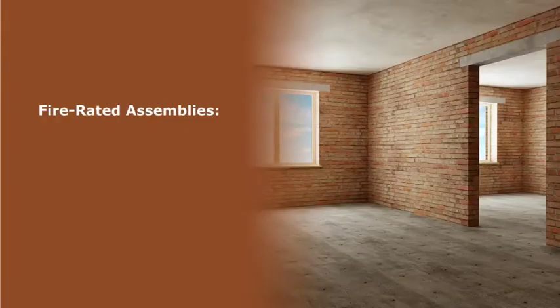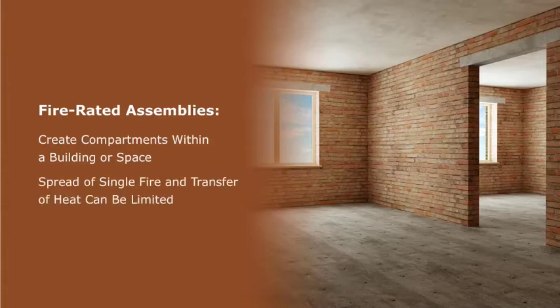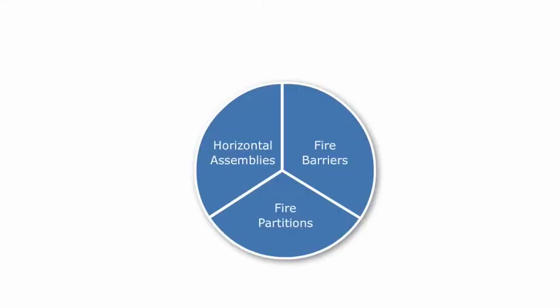Fire rated assemblies are used by the codes to create compartments within a building or space by separating different areas, sometimes both horizontally and vertically, to limit the spread of a single fire and transfer of heat. There are three basic types of rated assemblies: fire barriers, fire partitions, and horizontal assemblies. The codes determine when each type is required to provide the appropriate level of compartmentation.